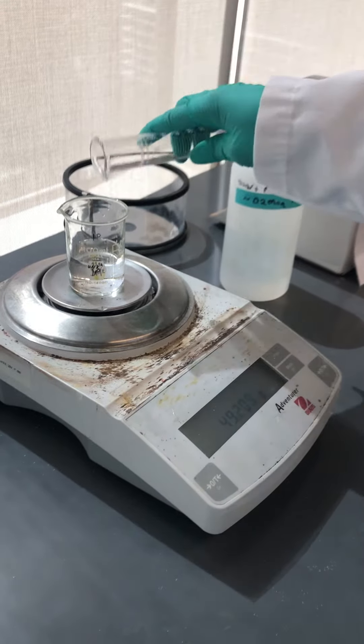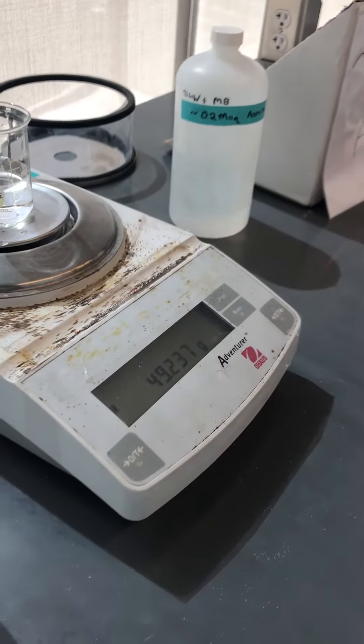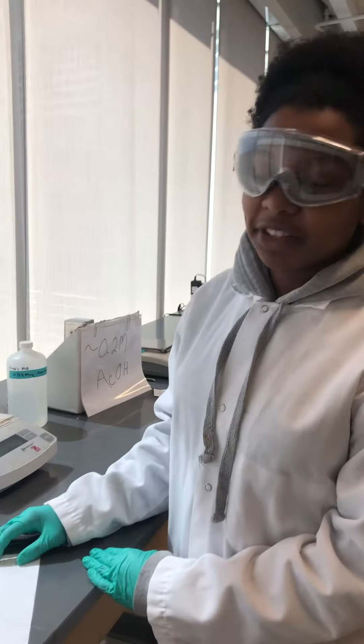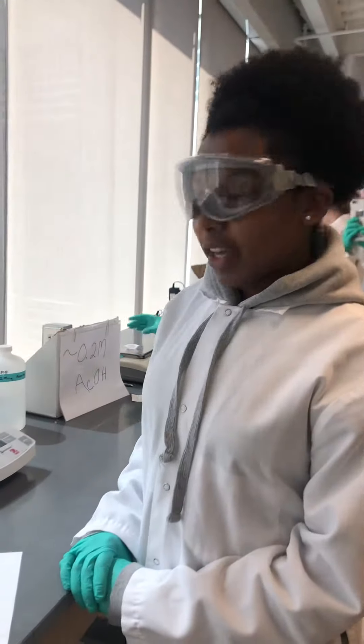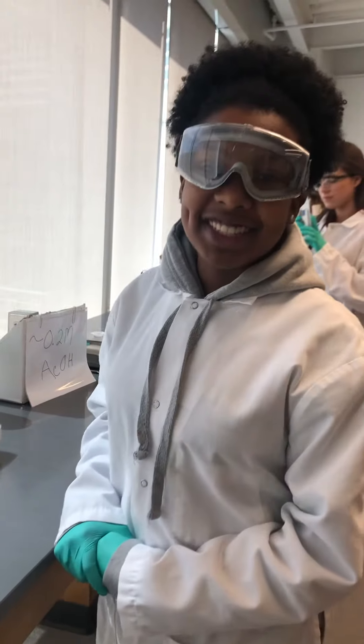So that is now 50 milliliters of water into the beaker. And because we tared the empty beaker, this is the mass of 50 milliliters of water. So 49.237. And we would keep those five sig figs because that is what our scale tells us.